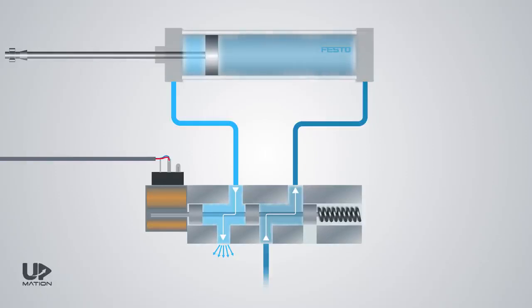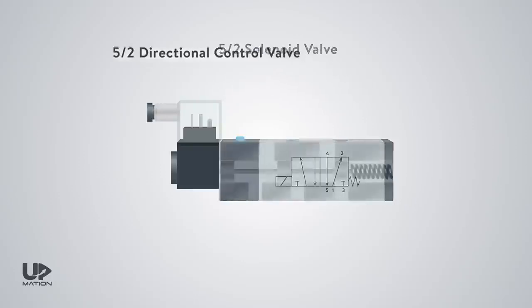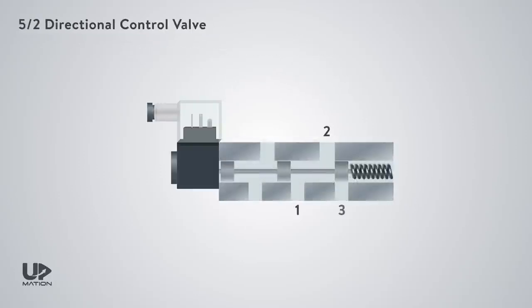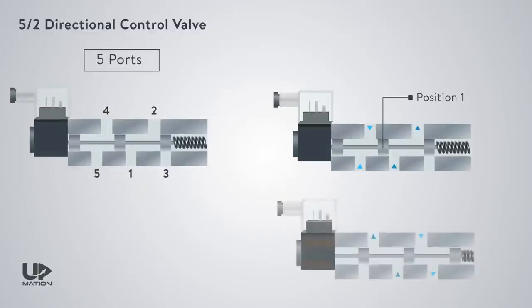Now it's time to learn how these valves are called and how to read their graphic symbols. This valve is known as a 5x2 solenoid valve or a 5x2 pneumatic directional control valve. The first digit is for the number of ports the valve has, and the second digit is for the number of states the spool can be in.